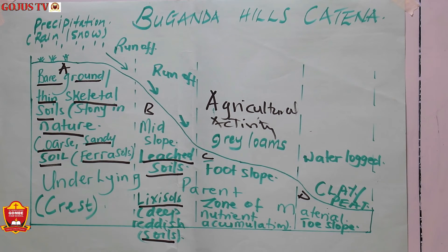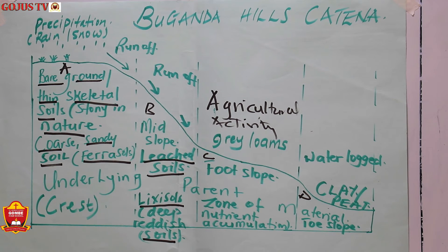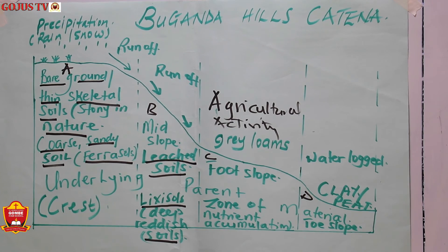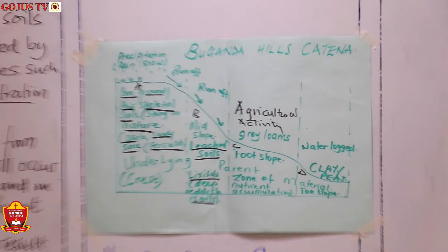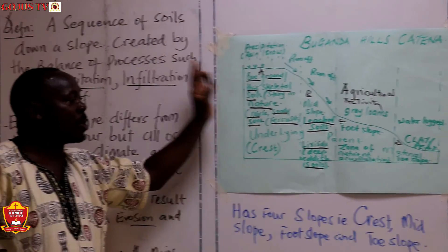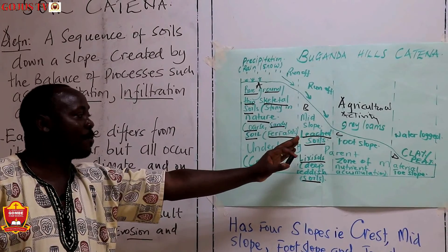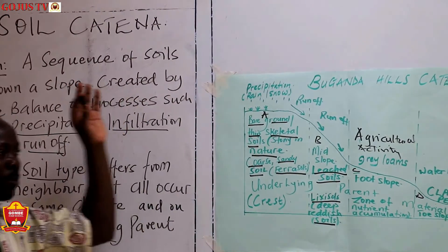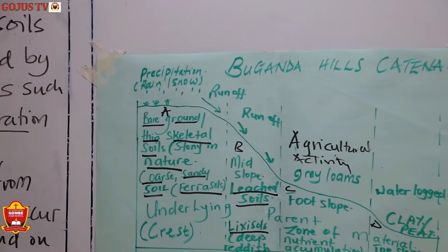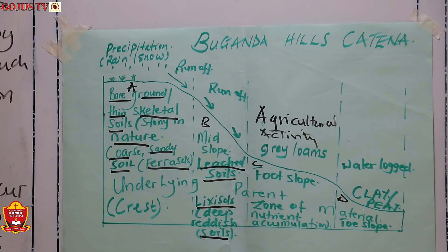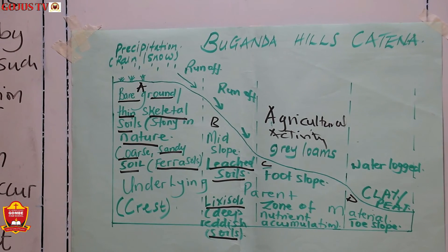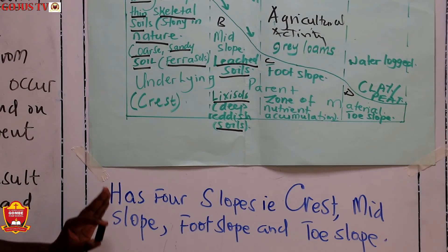There is a very big difference between the catena and the profile. The profile is the vertical sequence of soils — a vertical section from the top of the earth's surface down to the bedrock. While the catena is the horizontal sequence of soil types along a hill slope. Many students get that confusion, and that's why I've decided to break down the two very well.